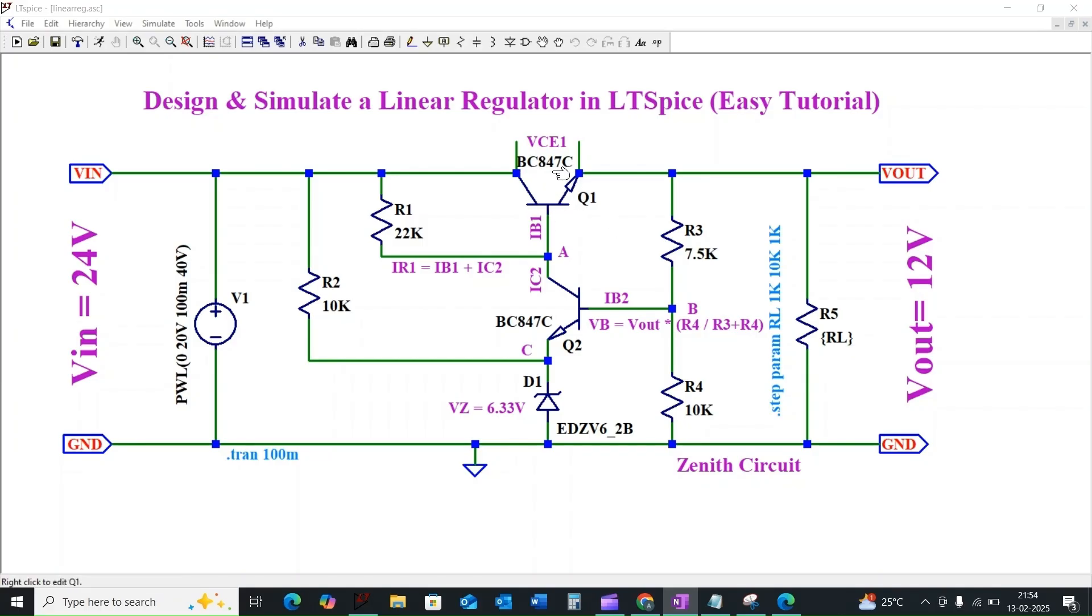An NPN transistor Q1, BC847C, acts as a series transistor and we can call it a pass transistor. The transistor Q2 we can call the error amplifier.